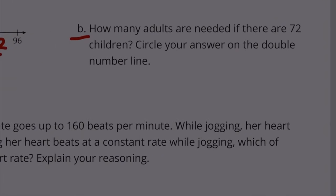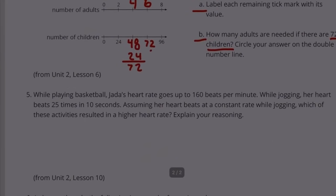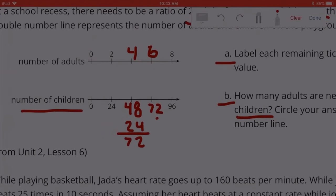Part B. How many adults are needed if there are 72 children? Circle your answer on the double number line. Number of children: 72. So we would need 6 adults for 72 children during recess.